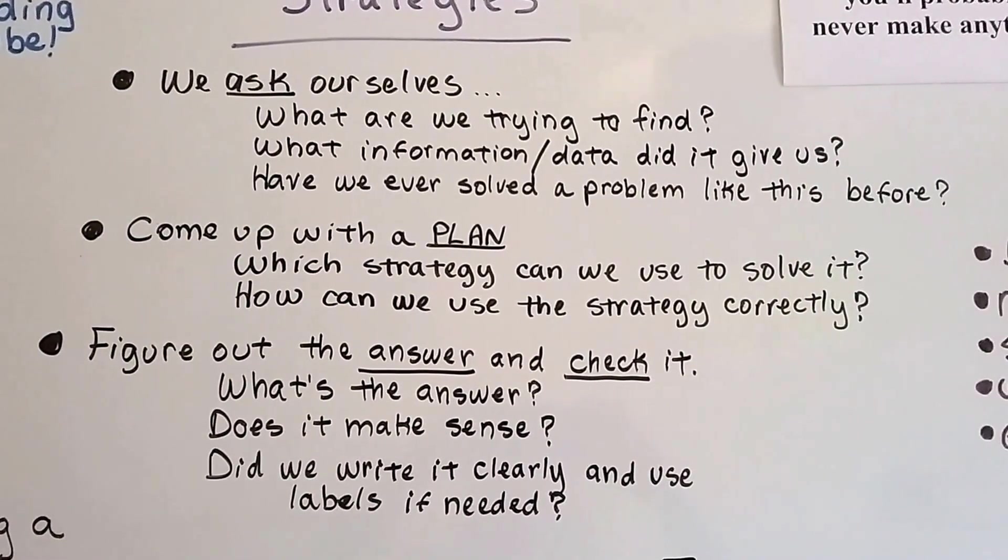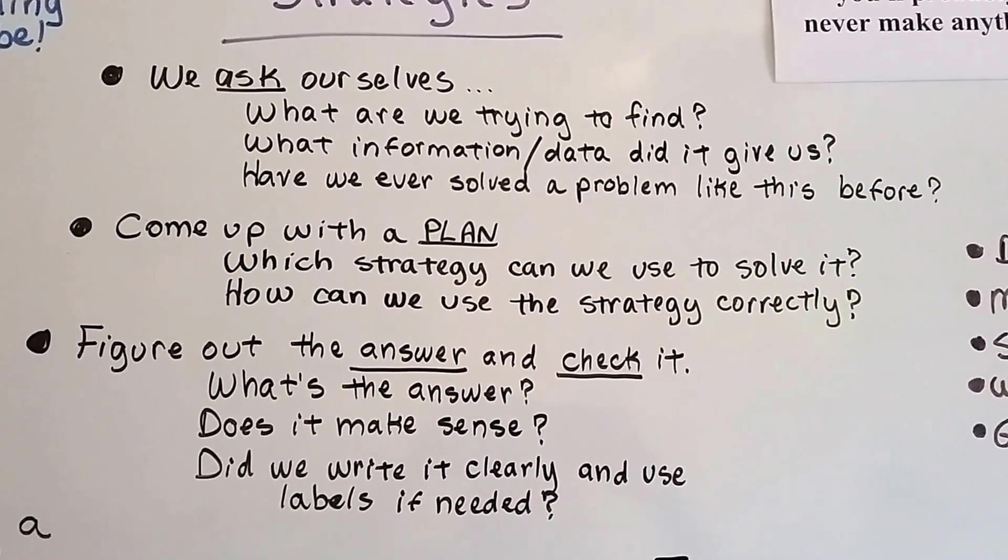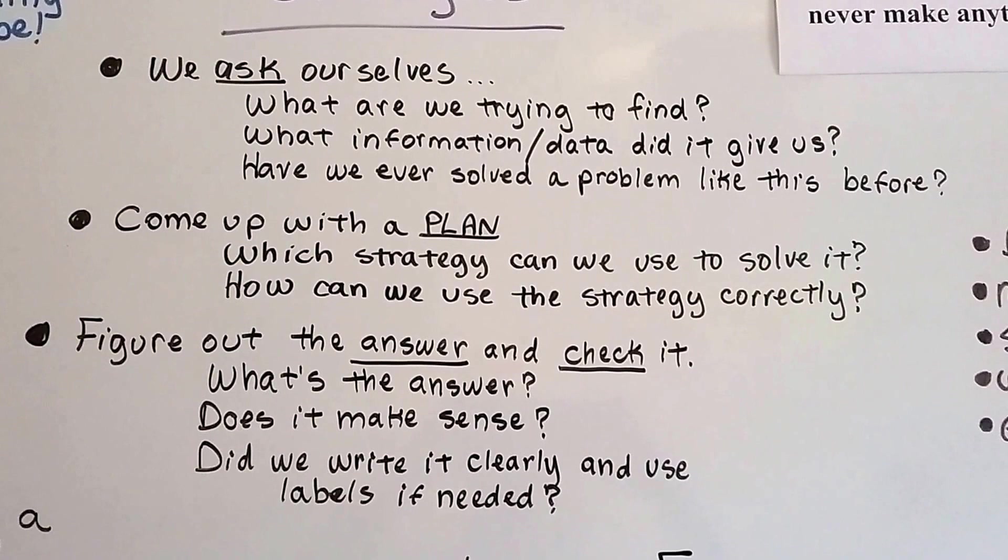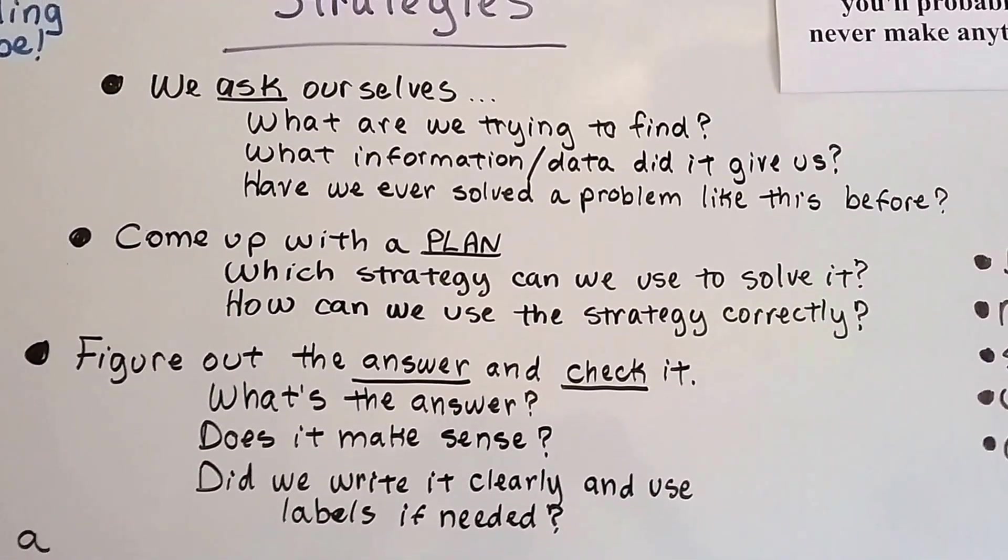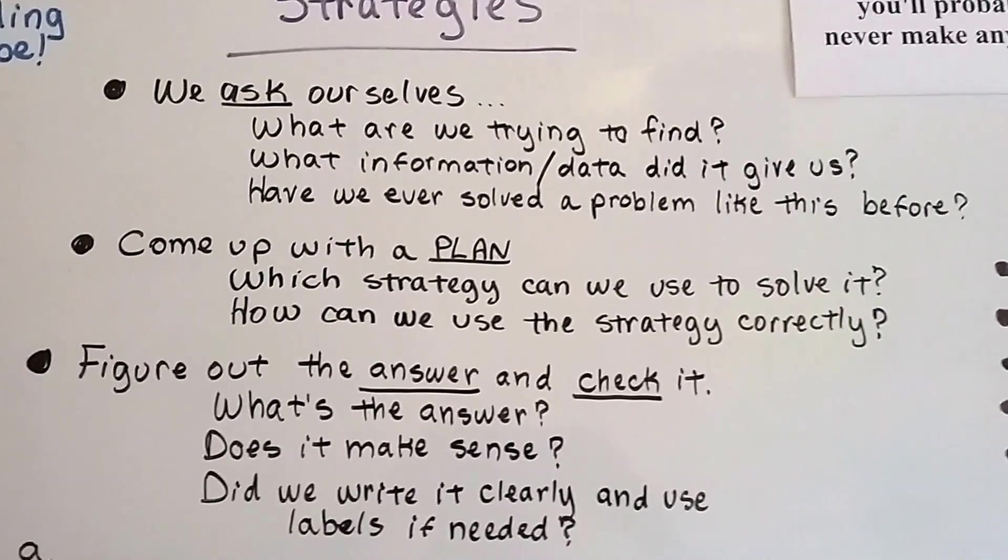We come up with a plan and which strategy can we use to solve it? How can we use the strategy correctly? We figure out the answer and check it. What's the answer? Does it make sense? Did we write it clearly and use labels if needed?